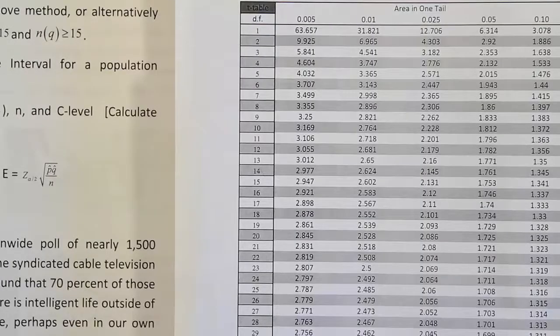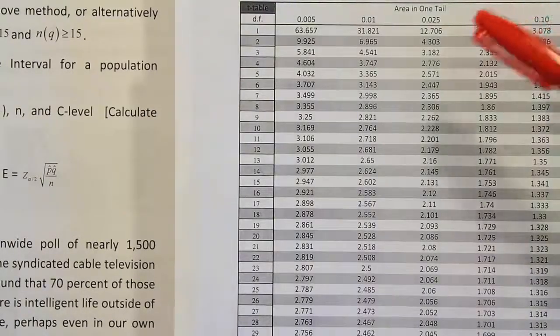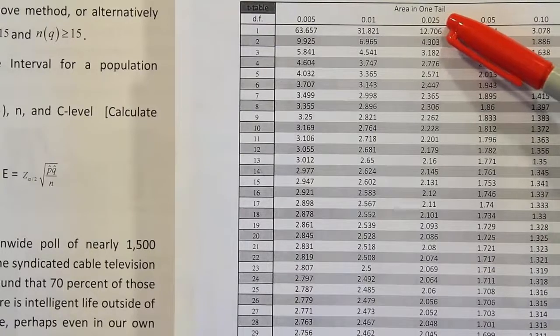Okay, so we had 95% confidence which leads to 5% alpha. Remember, if we're looking for z alpha divided by 2, we have to divide that alpha by 2. So 5% alpha divided in half is going to give you a value of 0.025.